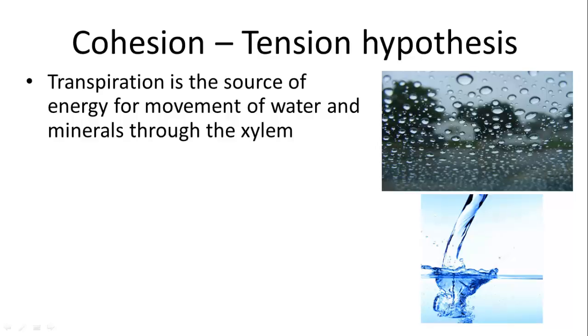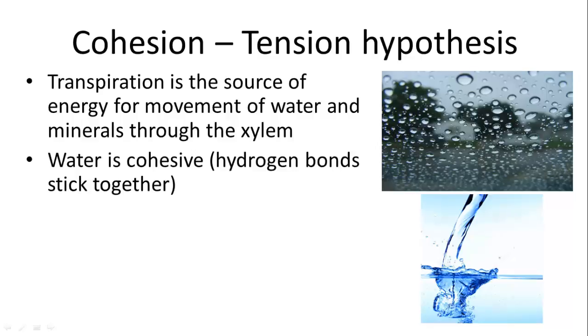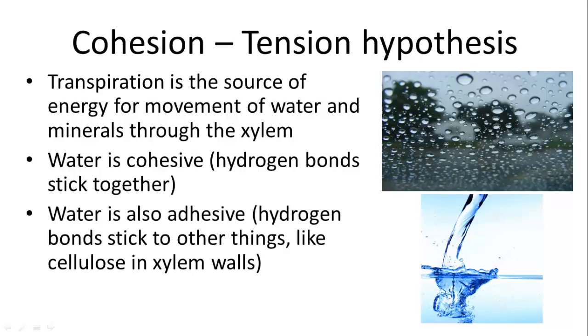So what allows water to do this is called the cohesion-tension hypothesis, which is basically that the source of energy for movement of water and minerals through the xylem is that evaporation by the sun. Water is cohesive, so it will stick to itself, so that's what gives the water the pulling or suction as it is evaporated. And it is also adhesive, so it will stick to the sides of the walls, kind of like in a straw, within the xylem walls. And that will counteract the effects of gravity.